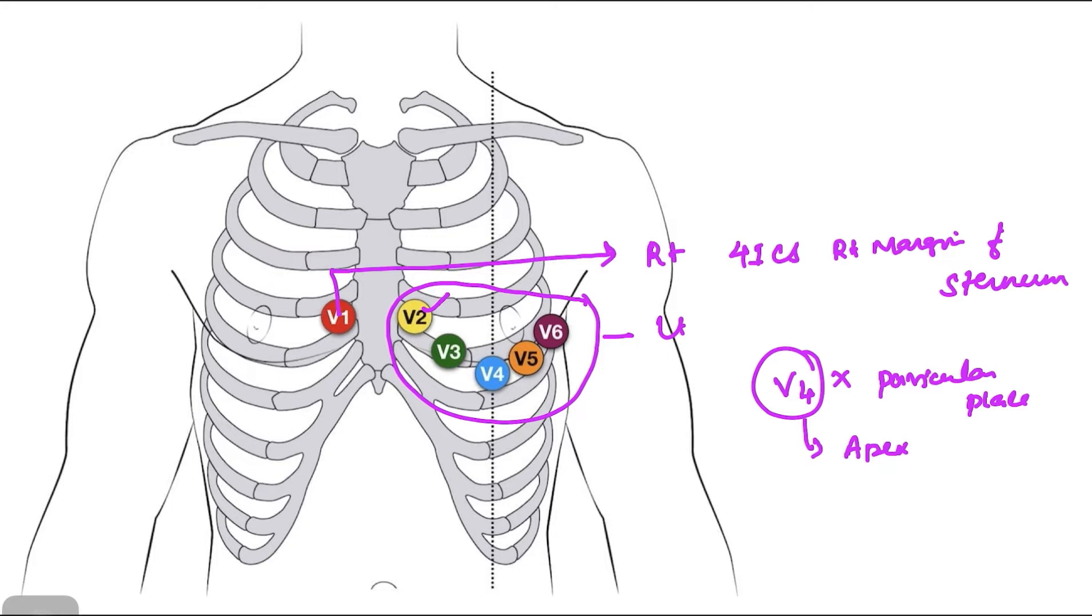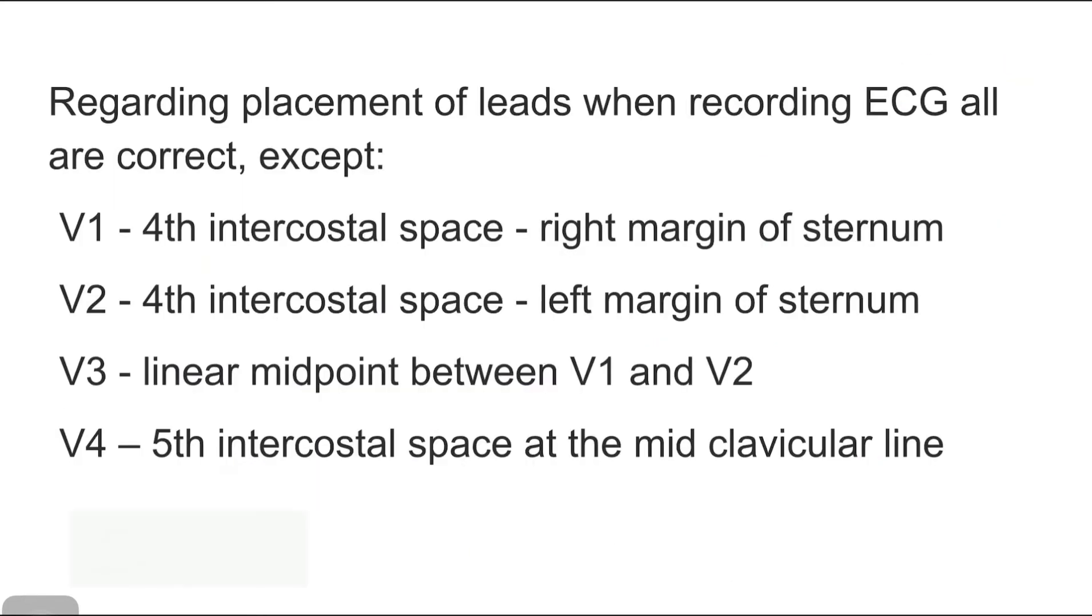Identify the cardiac apex and place the lead properly. Next is V5 which is placed in the fifth intercostal space at the anterior axillary line. And V6 in the same intercostal space in the mid axillary line. So where is V3 placed? V3 is placed after fixing all these leads between V2 and V4. Now we will review the question. You can note that V3 is not placed between V1 and V2. It is placed between V2 and V4. So this is the answer for this question.